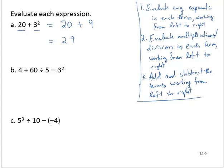Going on to exercise b, I see three terms: 4, 60 divided by 5, and 3 squared. Evaluating the exponent first, 4 plus 60 divided by 5 minus 9.